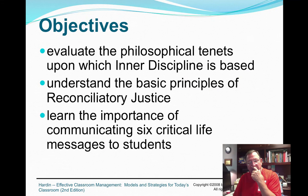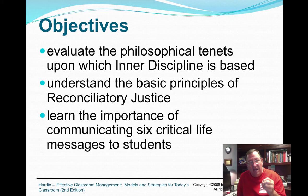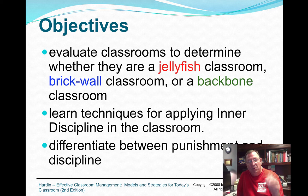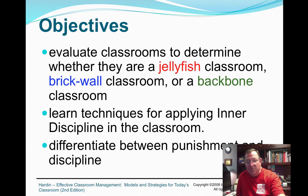The objectives here: we're going to look at the concept of reconciliatory justice, which implies that something is reconciled and there's a bow tied on the end of the problem. We'll talk about the six critical life messages a teacher should convey to students, look at three types of classrooms — jellyfish, brick wall, and backbone — and differentiate between punishment versus discipline.